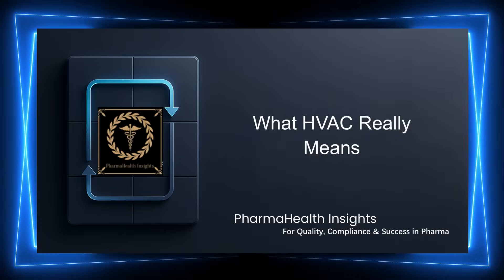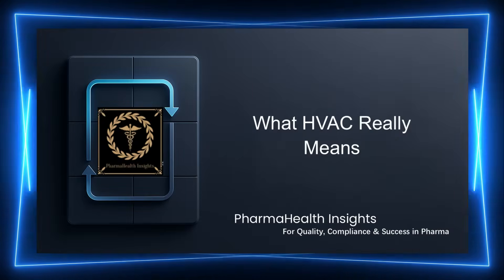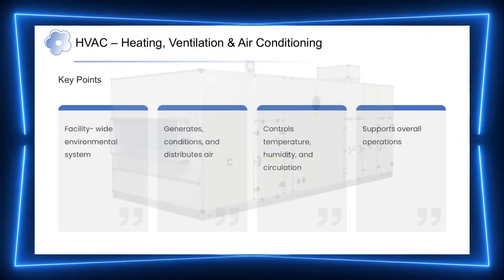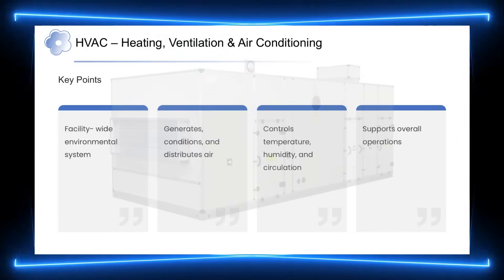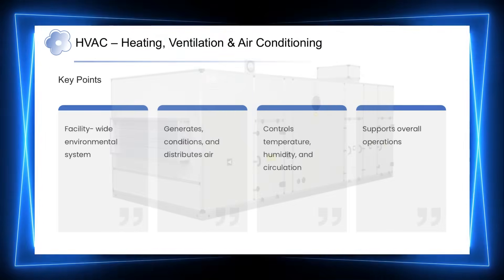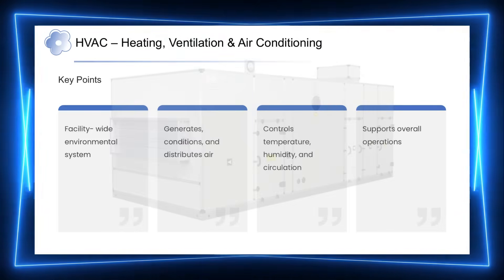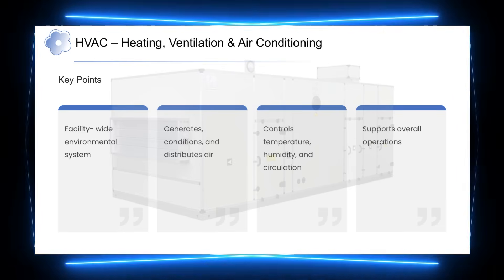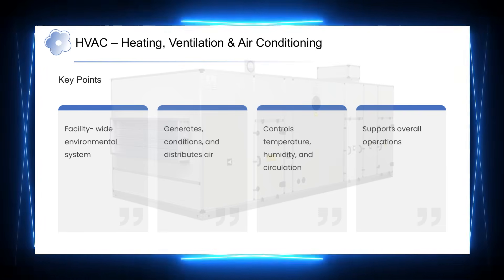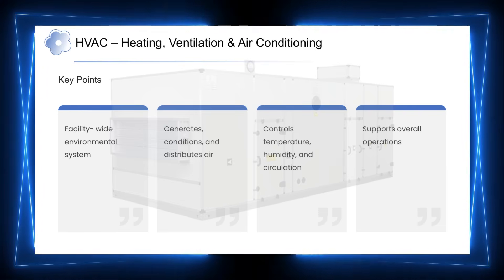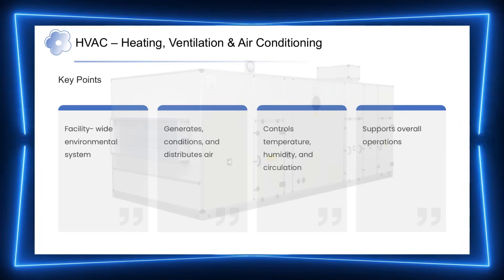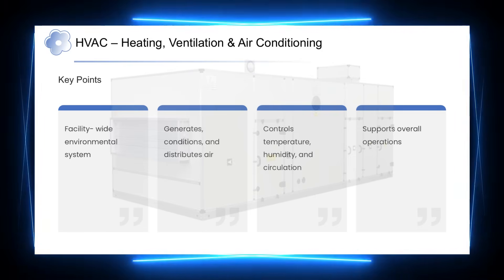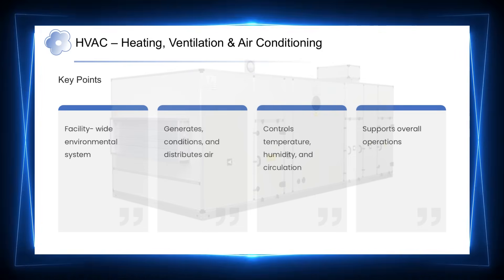To understand why this happens, we need to clearly understand what HVAC actually represents. HVAC is the backbone of environmental control for the entire facility. It ensures that air is generated, cooled or heated, humidified or dehumidified, and then distributed across different areas of the building. At a broader level, HVAC is responsible for maintaining stable conditions such as temperature, humidity, and air circulation, which are essential for smooth day-to-day operations.